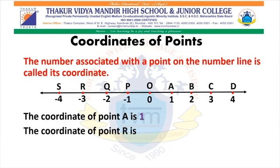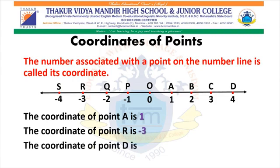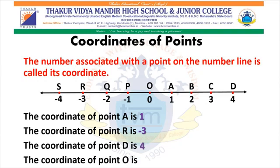Coordinate of point R: look at the number line, minus 3 is associated with point R. So, the coordinate of point R is minus 3. The coordinate of point D is 4. The coordinate of point O is 0.